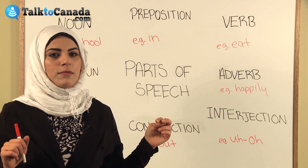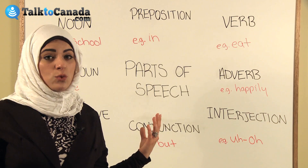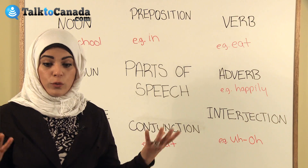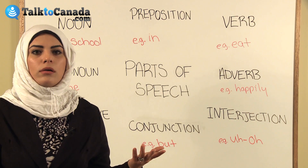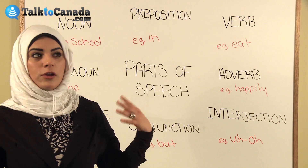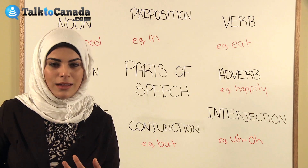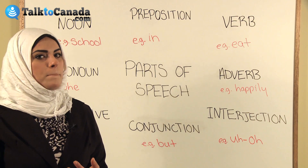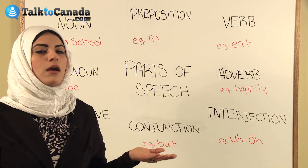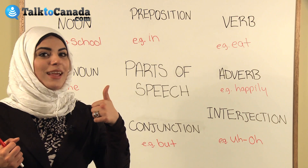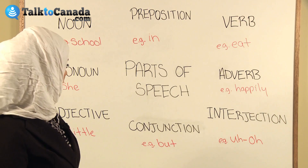The last one we're going to talk about is a conjunction. A conjunction is a word that connects words or groups of words together. An example of that is but, and, and or. I'll give you a sentence: I like reading and I like writing, but I don't like math. Where do you think the conjunctions are? And and but.